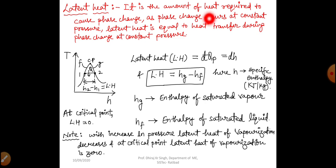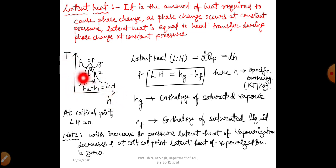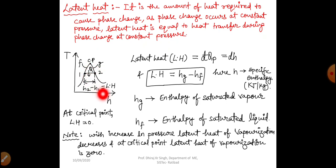What is latent heat? It is the amount of heat required to cause a phase change. Since phase change occurs at constant pressure, latent heat is equal to heat transfer during phase change at constant pressure. In this T-H diagram, where T is temperature and H is specific enthalpy, the phase change line goes from point 1 (complete liquid) to point 2 (complete vapor). Latent heat Q equals the heat transfer at constant pressure, which equals the change in enthalpy — so latent heat equals H2 minus H1.